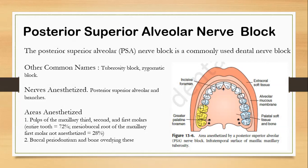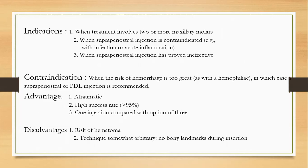The areas anesthetized are the pulps of the maxillary third, second, and first molars. However, for the first molar, the mesiobuccal root is not anesthetized in 28% of cases. For that 28%, you need to give local infiltration for each maxillary first molar you are going to extract. The buccal periodontia and bone overlying these teeth are also anesthetized.